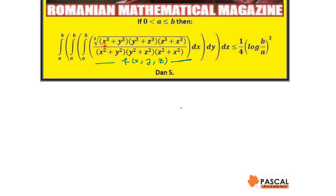Here f(x, y, z) equals the cube root of (x³ + y³)(y³ + z³)(z³ + x³) divided by (x² + y²)(y² + z²)(z² + x²).